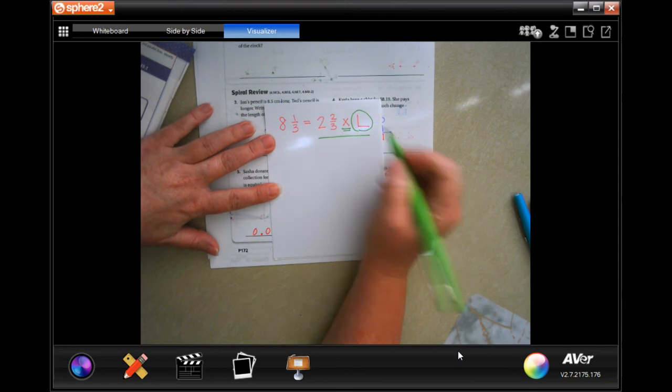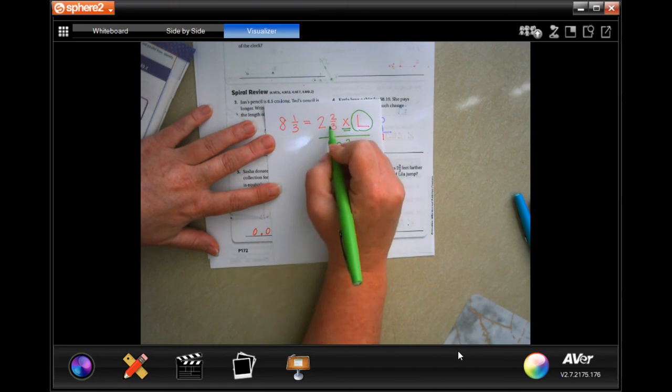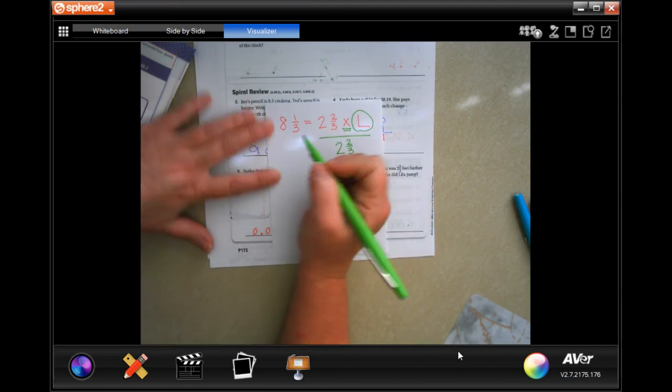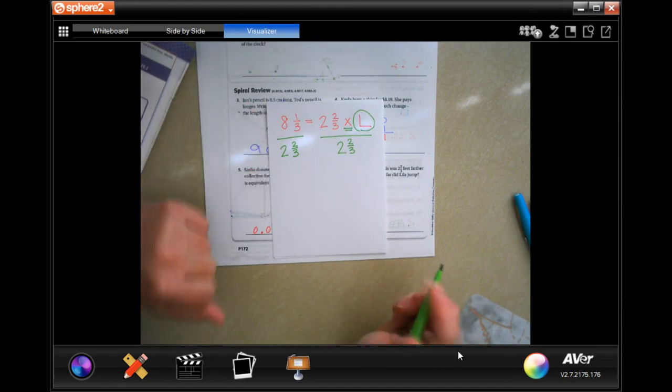I need to do the opposite of the sign, which is to divide. The fraction line is a division line. I have to divide by 2 and 2/3 because that's the number over here. Whatever I do to this side of the equal sign, I have to do to the other side.